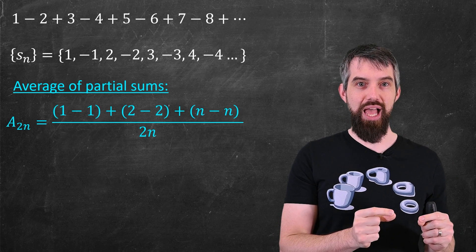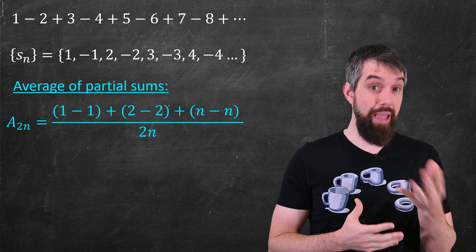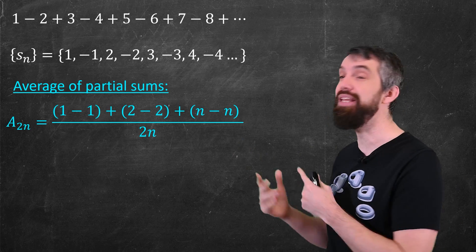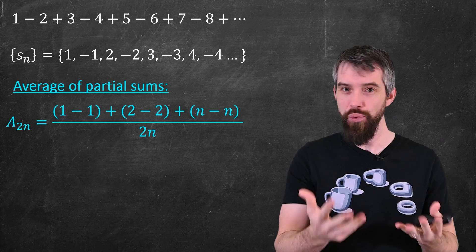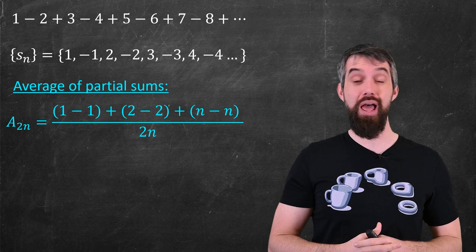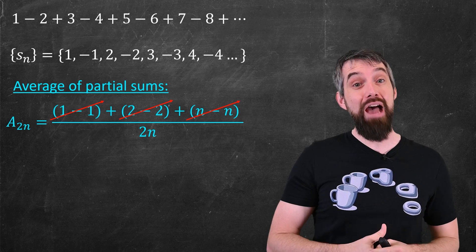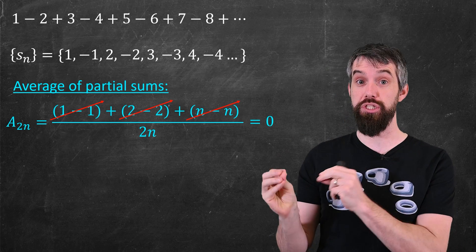For the evens, I get like 1 minus 1, 2 minus 2, all the way up to n minus n. And I've denoted an even by a 2n. 2n forces it to be even. And what's relevant here is that I've divided up in all these pairs. 1 minus 1 is 0. 2 minus 2 is 0. n minus n is 0. The average of the evens is just 0.